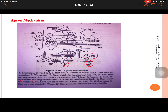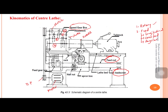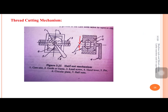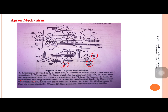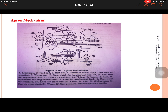Now let us look at how to achieve the cross feed. When the feed rod rotates, motion is transferred from sliding gear 22 to gear 23, then to worm gear 24, then to worm gear 8, and then to gear 9. Gear 9 and gear 18 are externally in contact, so the motion causes rotation of gear 18.